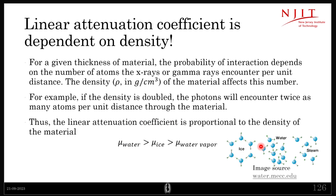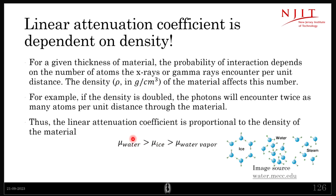The linear attenuation coefficient also depends on density. Consider ice, water, and steam: water has the highest density, steam the lowest, and ice is in between. Because water has more molecules crowded into a given space, its linear attenuation coefficient is highest — denser materials attenuate X-rays more. So the linear attenuation coefficient of water is higher than that of ice and water vapor.